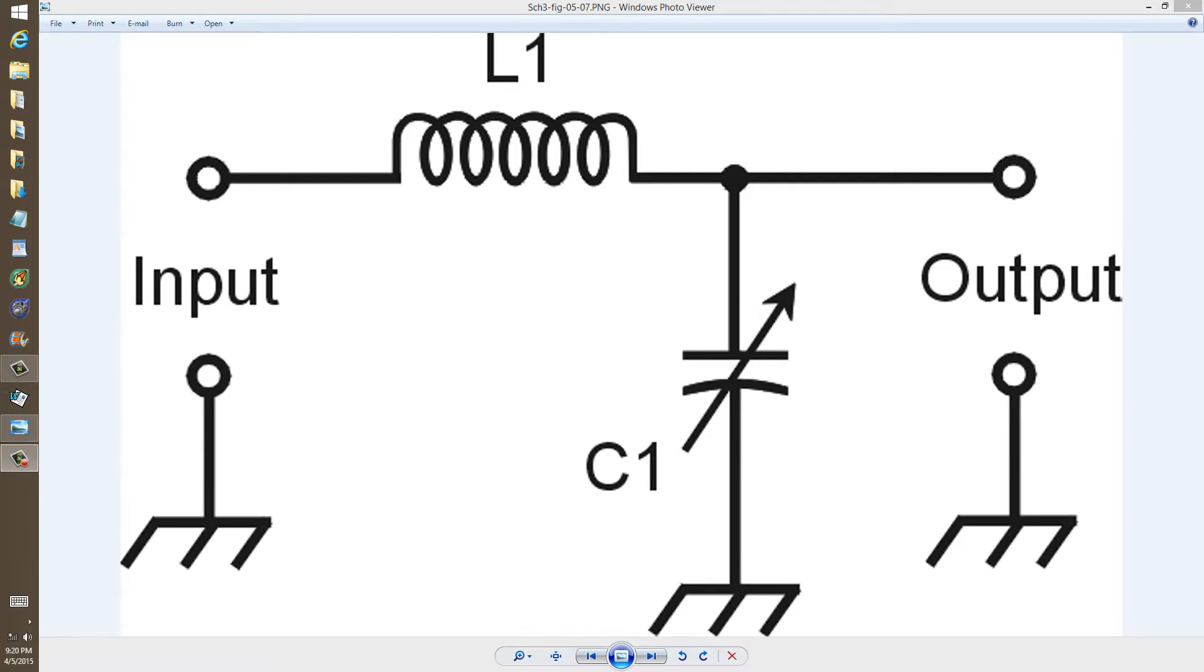Here to show you three examples of tunable low-pass filters that you can use in the output of your ham radio transmitter between the transmitter output itself and your antenna. This is assuming you are not using a transmatch.